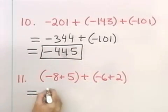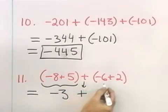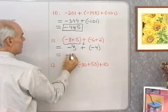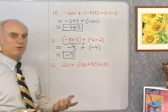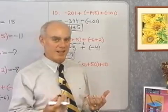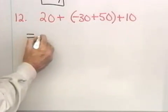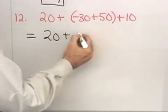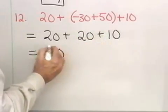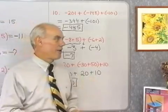Now I have problems with numbers in parentheses. I simplify inside each set of parentheses first. Negative 8 plus 5 gives negative 3; negative 6 plus 2 gives negative 4. Then I add negative 3 and negative 4 to get negative 7. For the last problem: parentheses contain 20 plus negative 30 plus 50, plus 10 outside. Inside the parentheses, negative 30 plus 50 is 20; then 20 plus 20 is 40; and 40 plus 10 is 50.